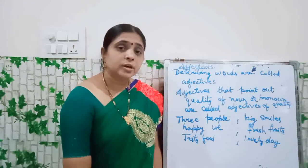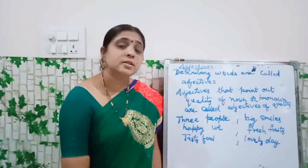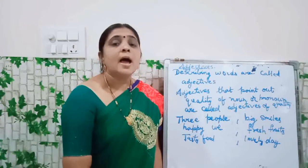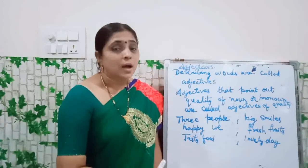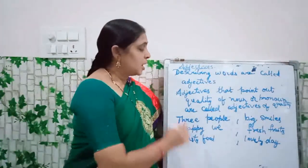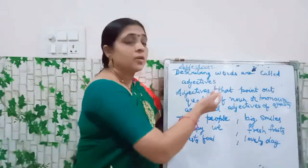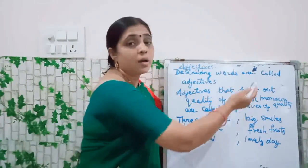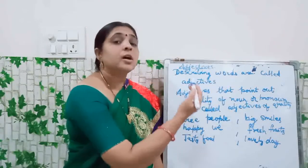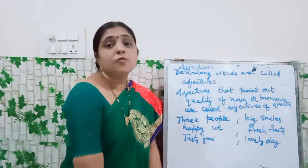Now we are going to learn about adjective. What is an adjective, children? Adjective means the describing words. Adjectives are the describing words. What is a describing word? That which describes the noun. Adjectives are the describing words which describe about the noun. Describing words are called adjectives. Adjectives point out the quality of a noun or pronoun. The adjectives which point out the quality of a noun or pronoun are called adjectives of quality.